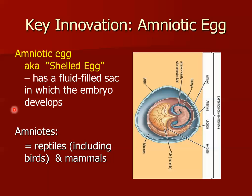Amniots include reptiles and mammals. This is a huge evolutionary development because it helps avoid desiccation. If you look at a frog egg, it has to be laid and the embryo develops in a pond or lake or some aquatic environment. But here, the embryo has its little pond right in the egg.